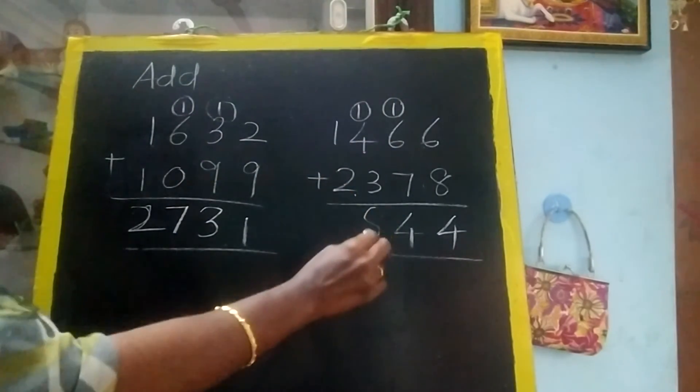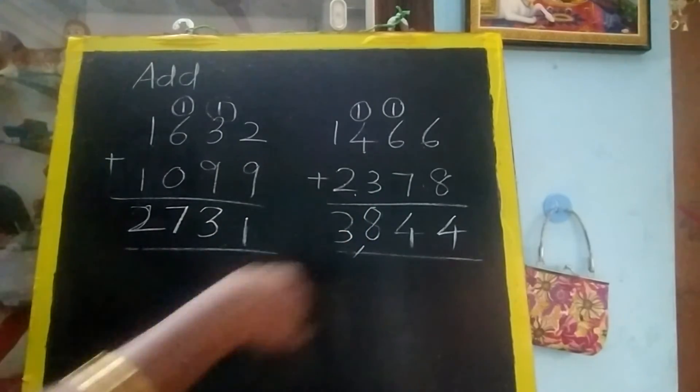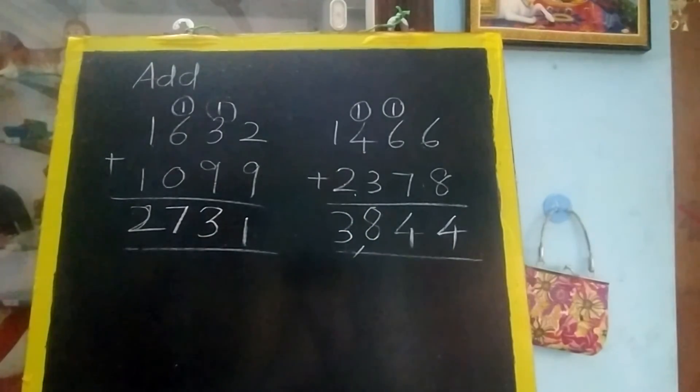One plus two equals three. So the answer is three thousand eight hundred and forty-four. So like this you have to do.